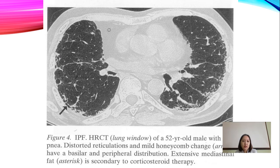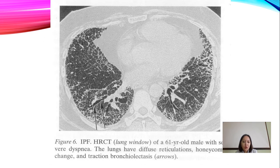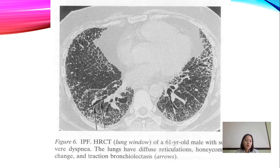The fourth chest X-ray shows honeycomb changes and distorted reticulation. On the HRCT scan you will see diffuse reticulation, honeycomb changes, and traction bronchiectasis — indicated by the arrows on the scan.